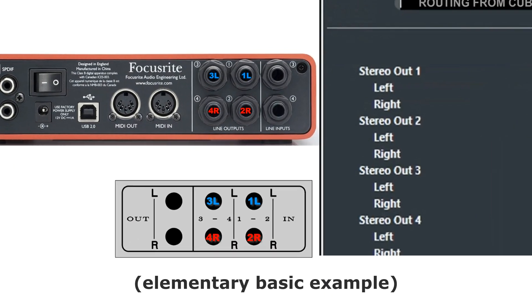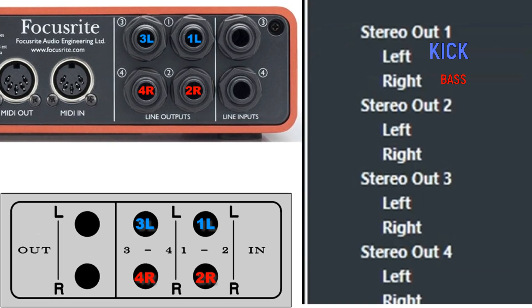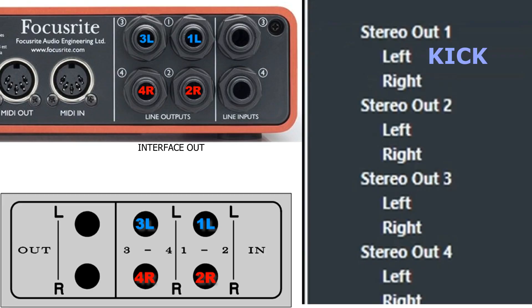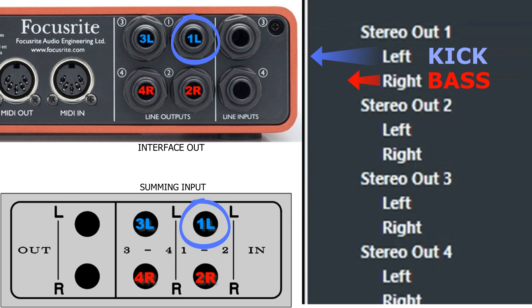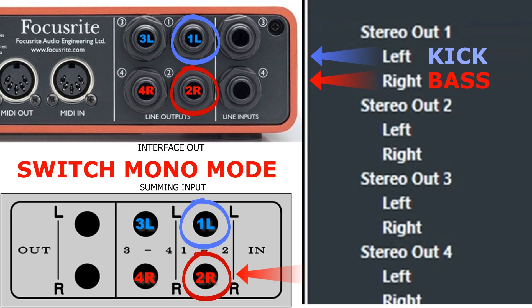Mono instruments routing from computer DAW. Let the example be a kick and a bass track. Assign the kick track and send it to the left interface output number 1, then to the corresponding summing input, which will be left input number 1. Assign the bass track and send it to the right interface output number 2, then to the corresponding summing input, which will be right input number 2.